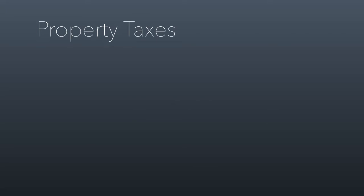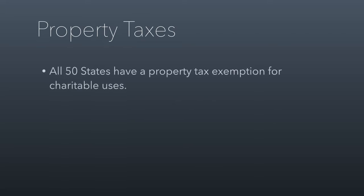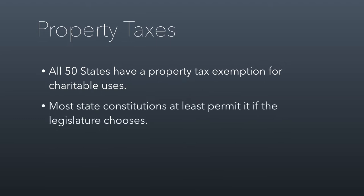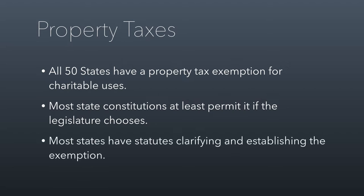Let's start off with property taxes. All 50 states have a property tax exemption for charitable uses, meaning that if you're using property like real estate for charity — like a school, a boys and girls club, a church — then all states allow a process for you to get exempt from that property tax. Most state constitutions actually include an exemption requiring it or permitting it that charities are exempt from paying property taxes. And then states have clarifying statutes that establish the exemption where it is in the constitution.